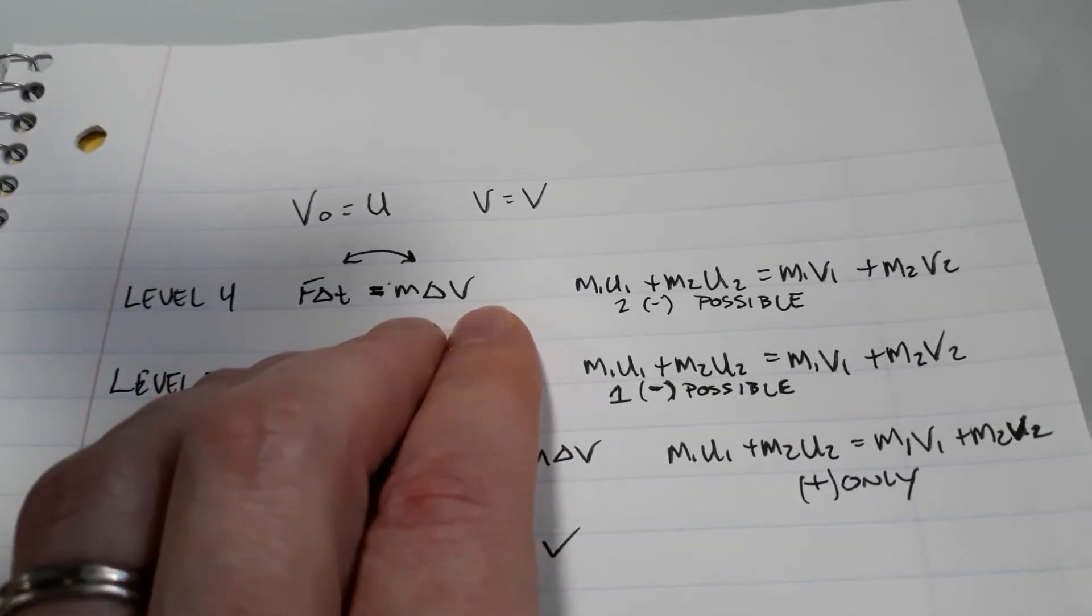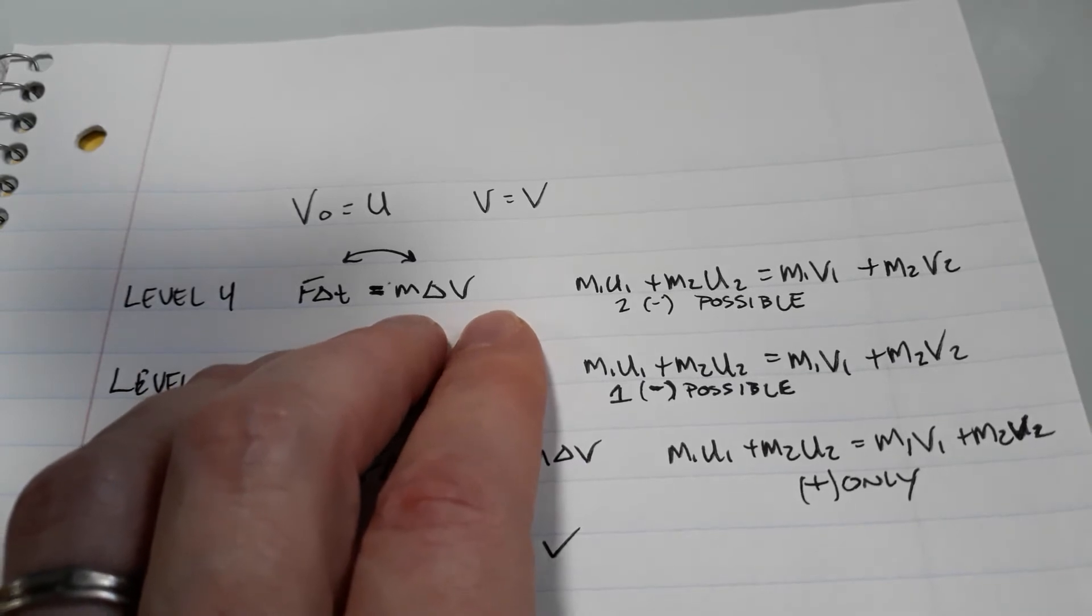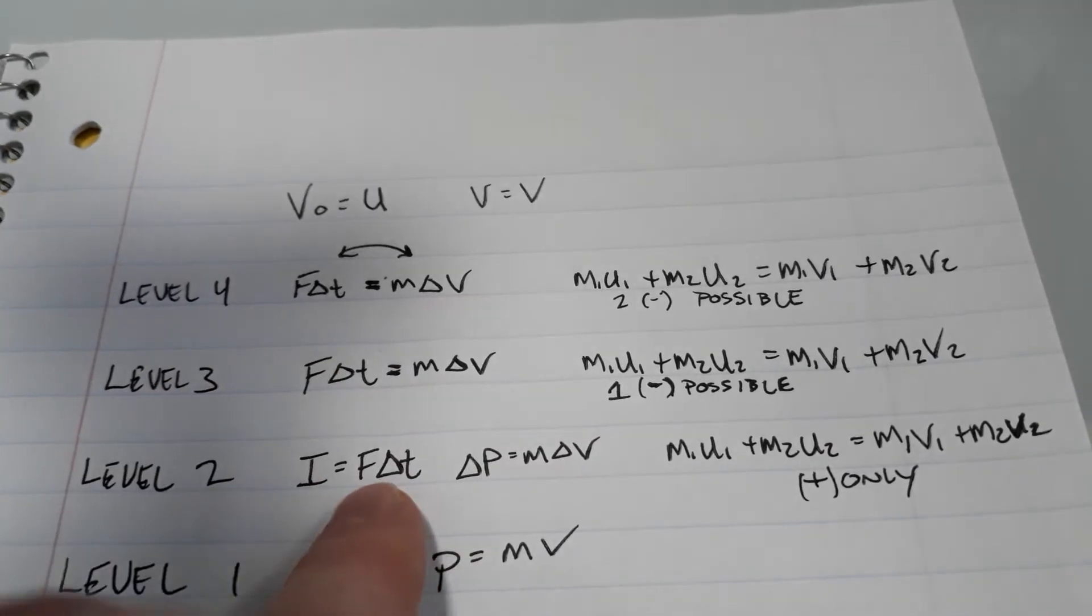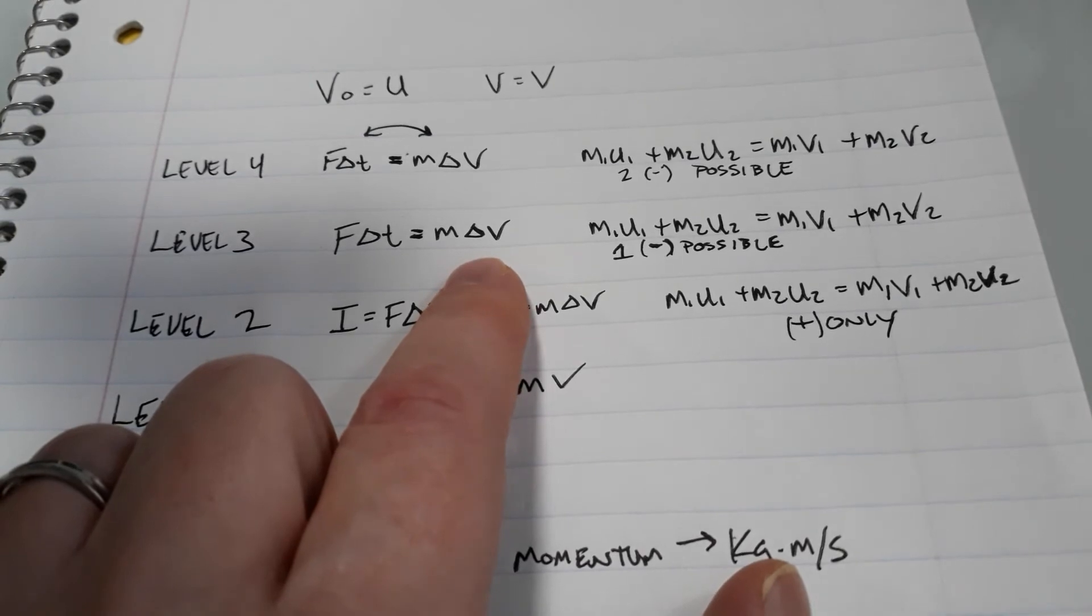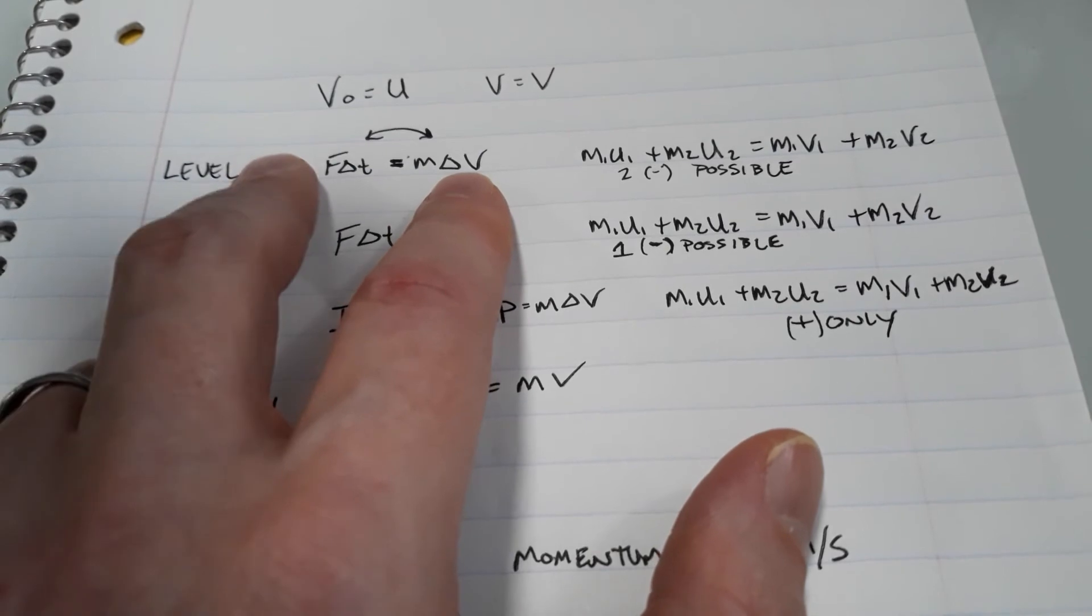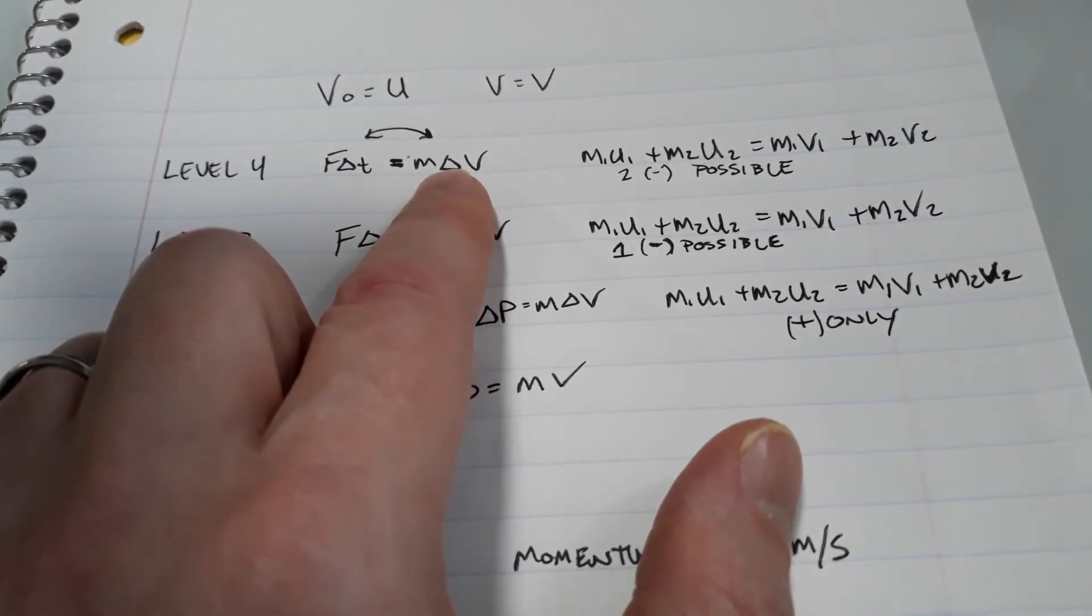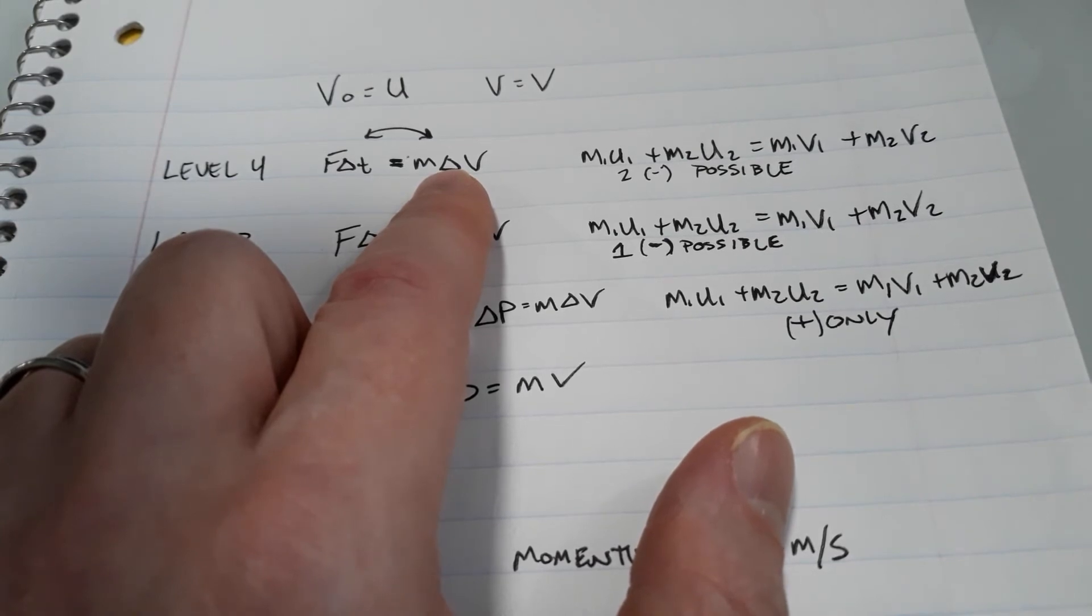What are you going to do at level four? You're going to learn to indirectly solve for something. Let's say I ask you for the impulse. What's the impulse? But I do not give you the force and I do not give you the time. That's the impulse equation. So then how would you solve it? You would solve it by looking and seeing if you have anything on the momentum side. I can solve for impulse by actually making the calculation of the change in momentum. That's pretty high level stuff, conceptually challenging.